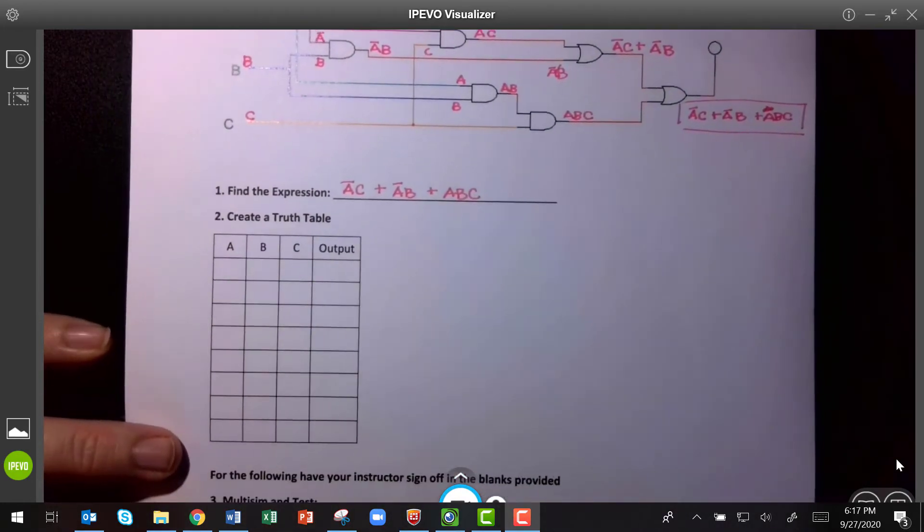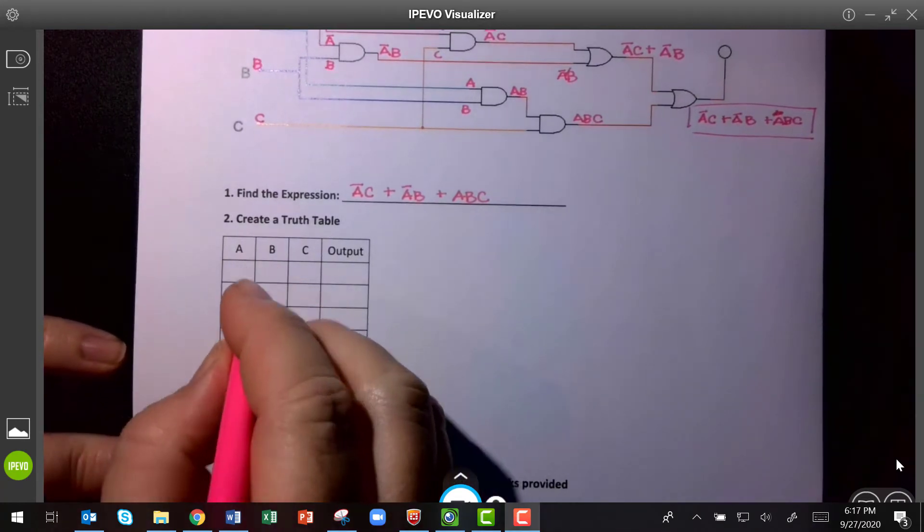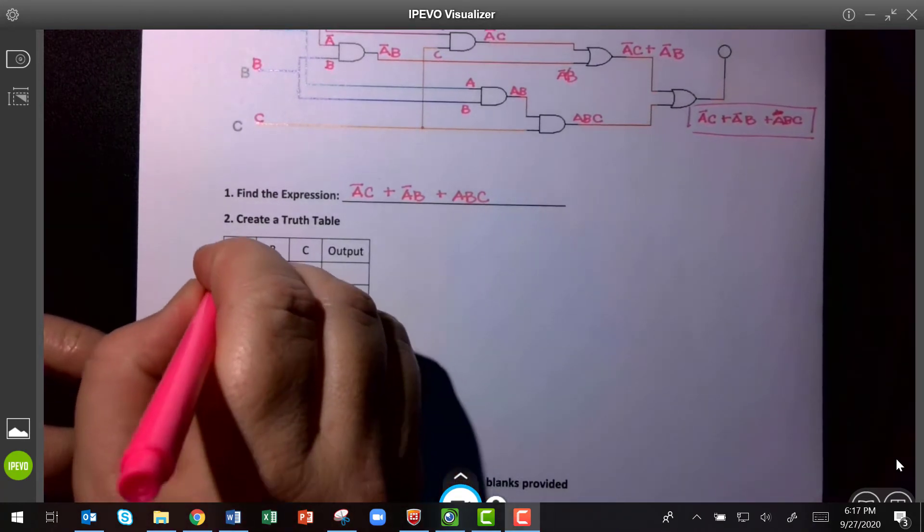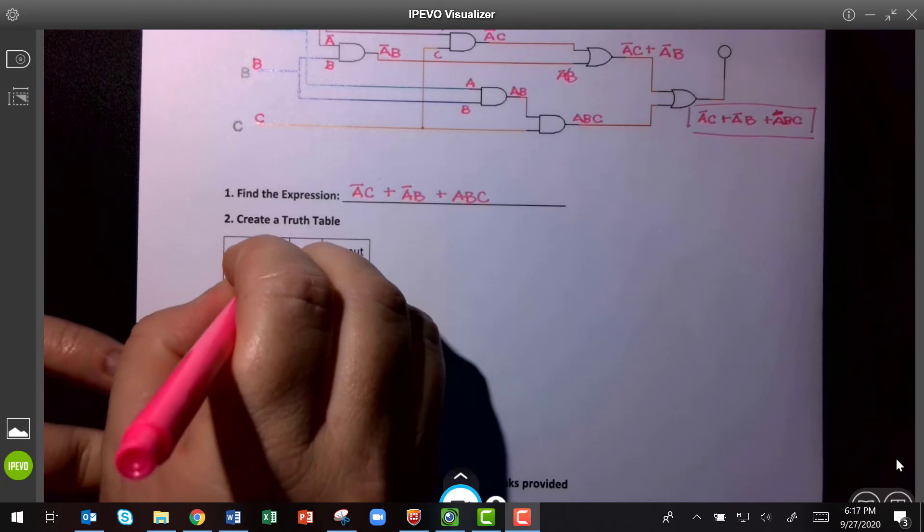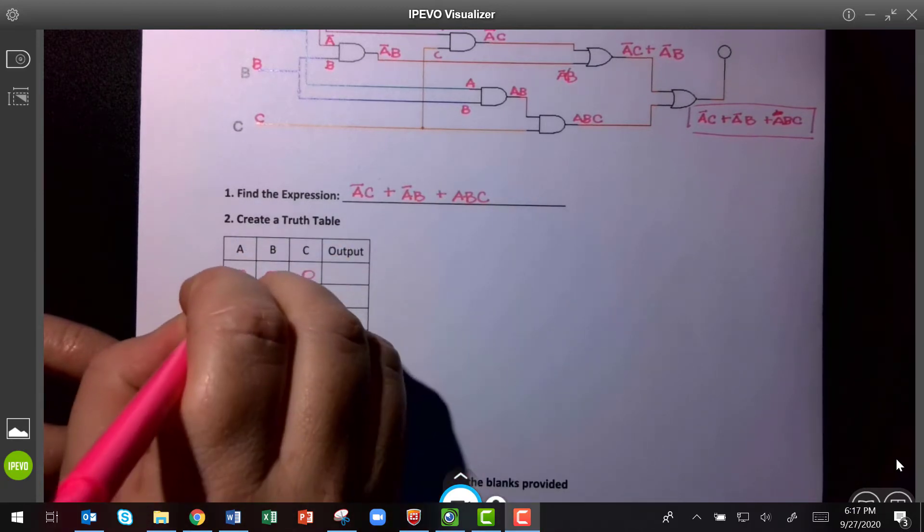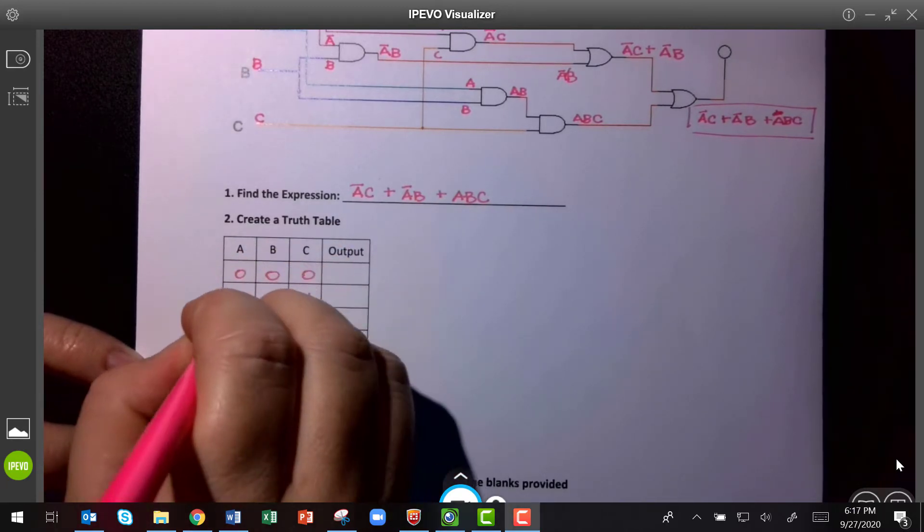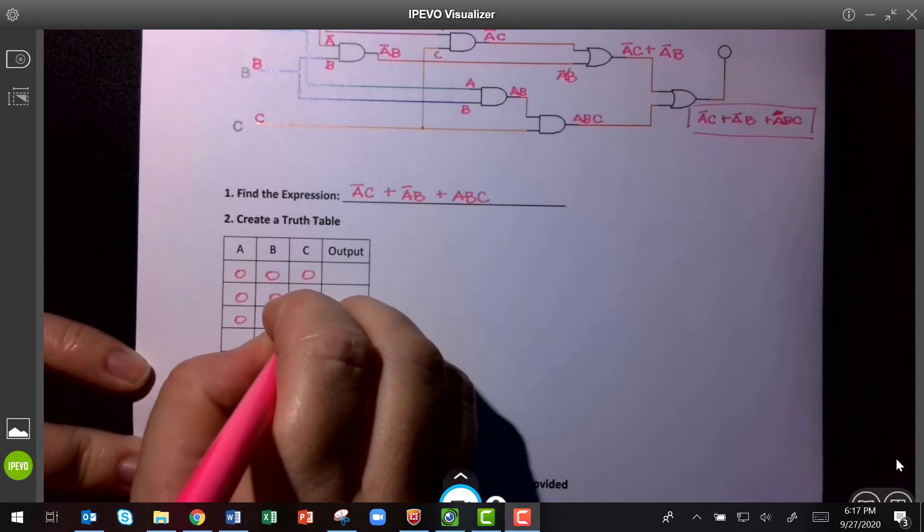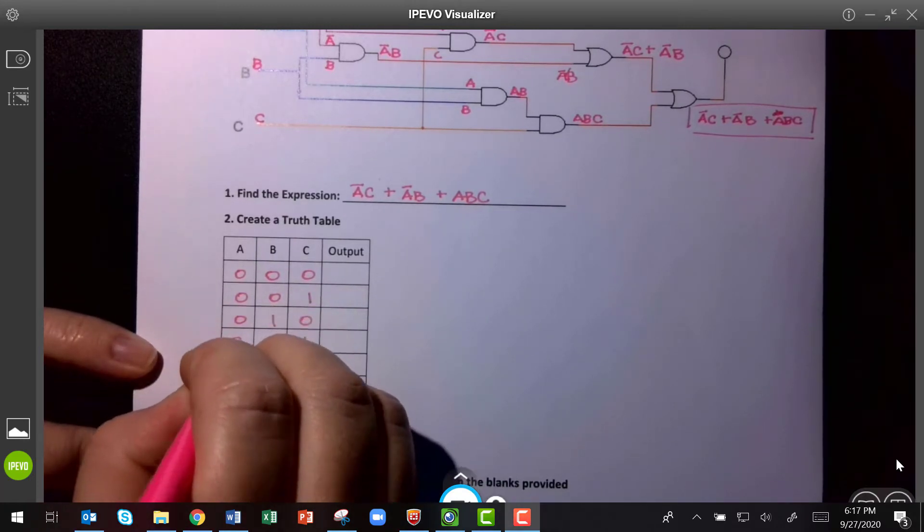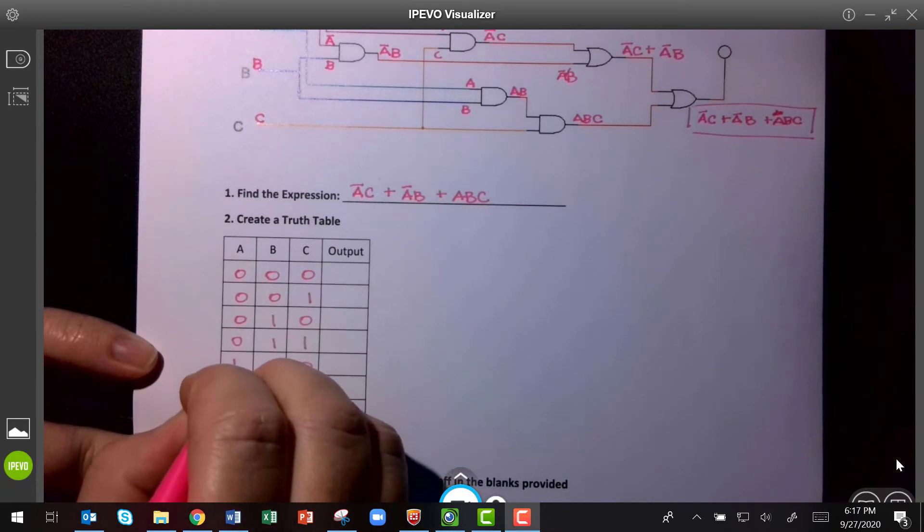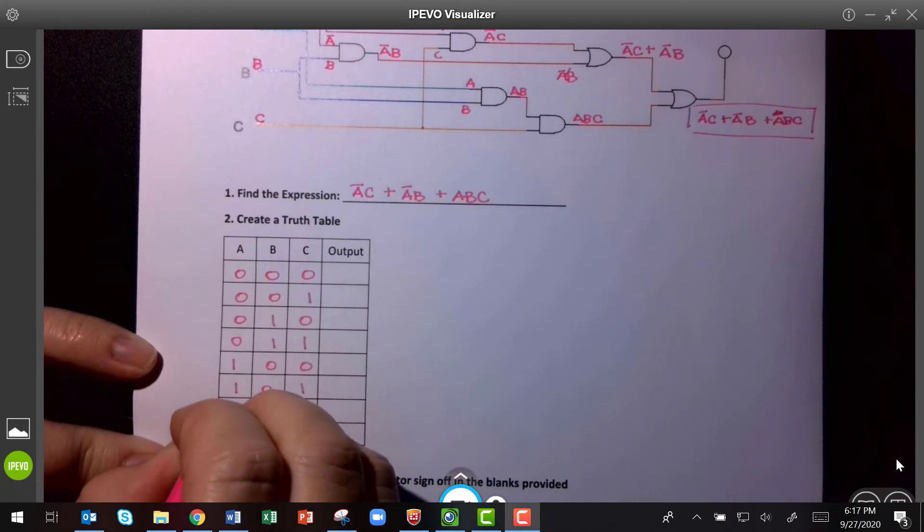Okay, so now I want to fill in my truth table. So first I'm going to fill in my inputs. I always start with the first line being 0, and then 1, and then 2, and then 3, then 4, then 5, then 6, then 7.